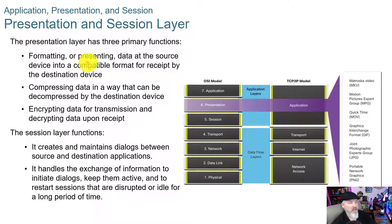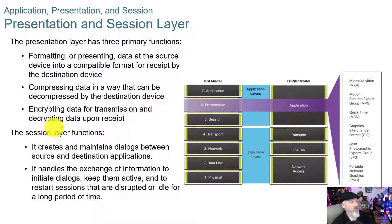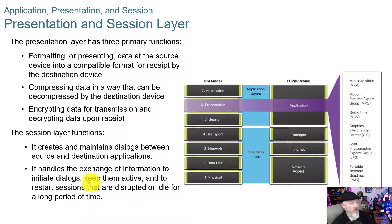The presentation and session layers have three primary functions: formatting or presenting data at the source device into a compatible format for receipt by the destination device; compressing data in a way that can be decompressed by the destination; and encrypting data for transmission and decrypting data upon receipt. The session layer creates and maintains dialogue between the source and destination applications, and handles the exchange of information to initiate dialogues, keep them active, and restart sessions that are disrupted or idle for a long period of time.